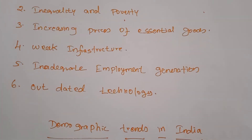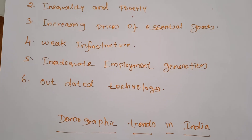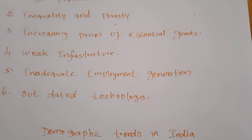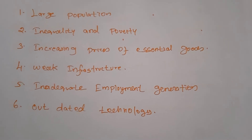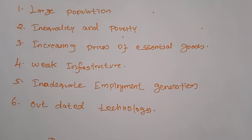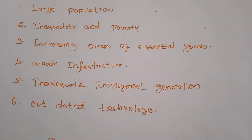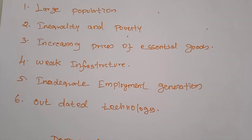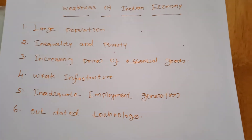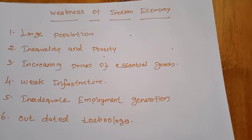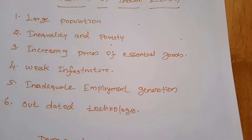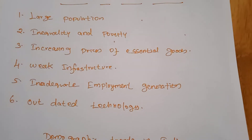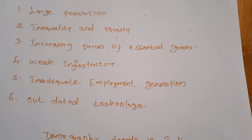The sixth factor is outdated technology. The level of technology in agriculture and small-scale industry is still outdated and obsolete. Outdated technology is used in the agricultural sector and even in backward industrial sectors, which means we cannot produce more, and the Indian economy cannot grow. So these are the six factors that make our economy weak: large population, inequality and poverty, increasing prices of essential goods, weak infrastructure, inadequate employment generation, and outdated technology.